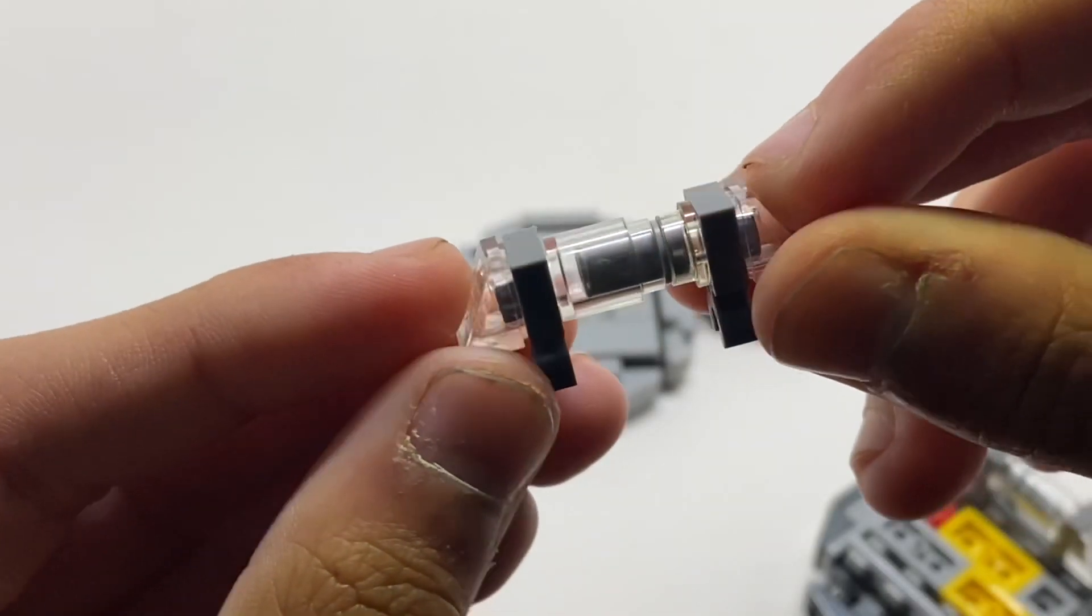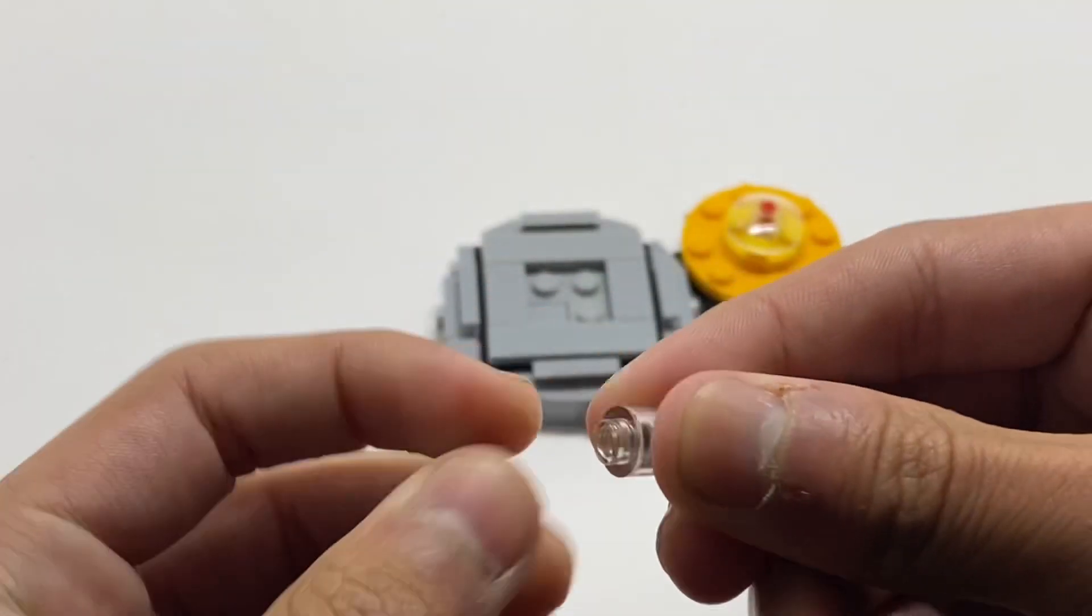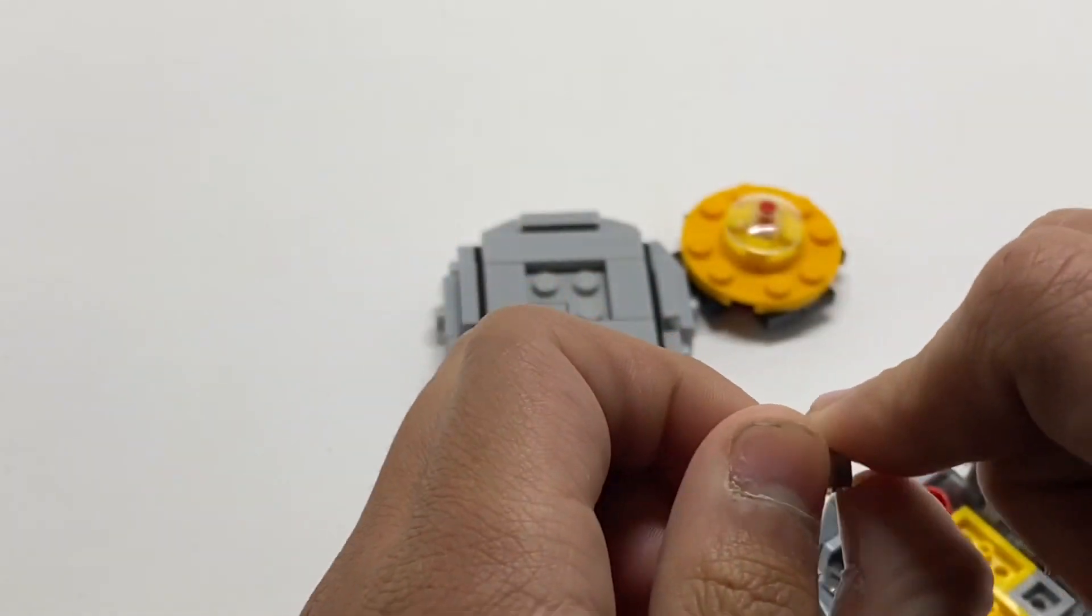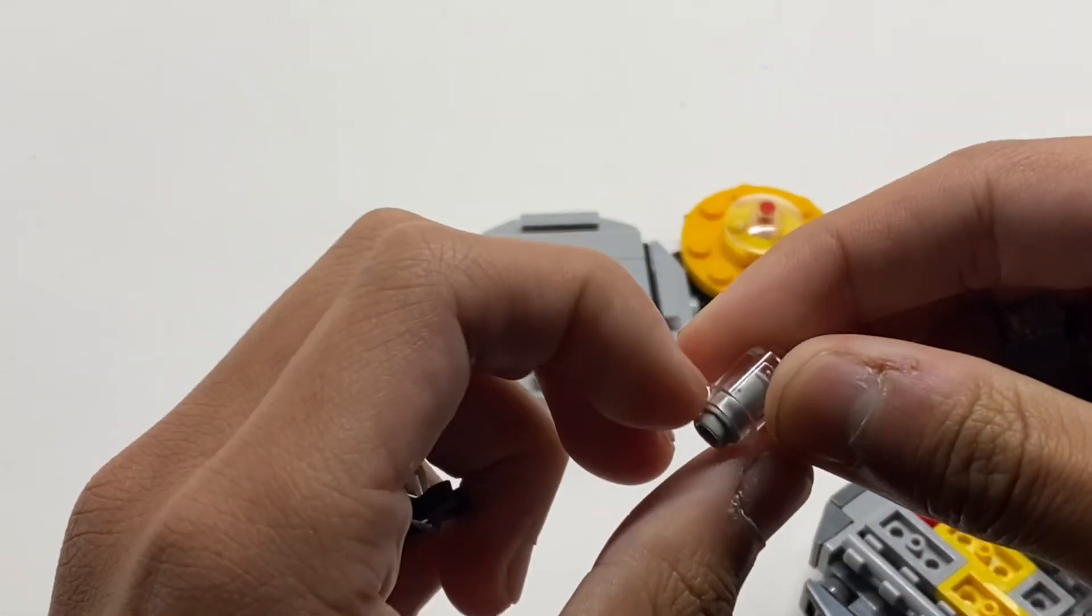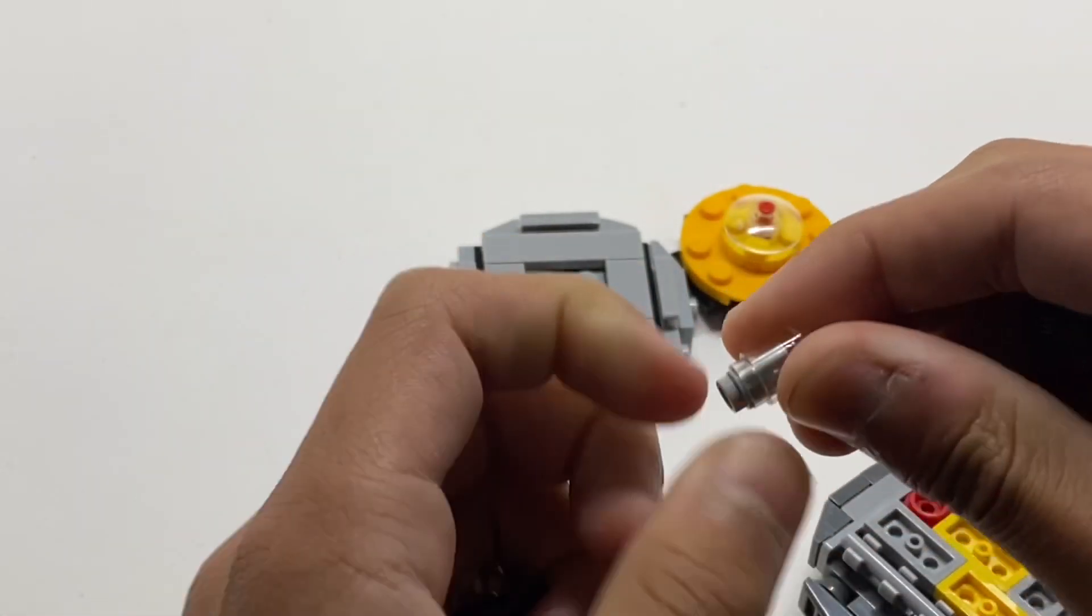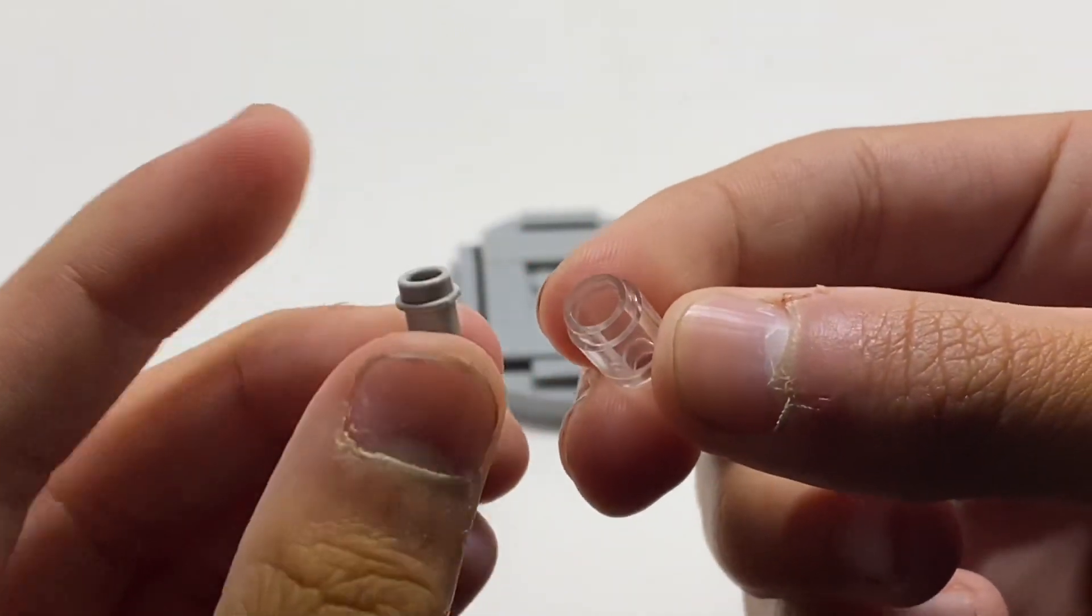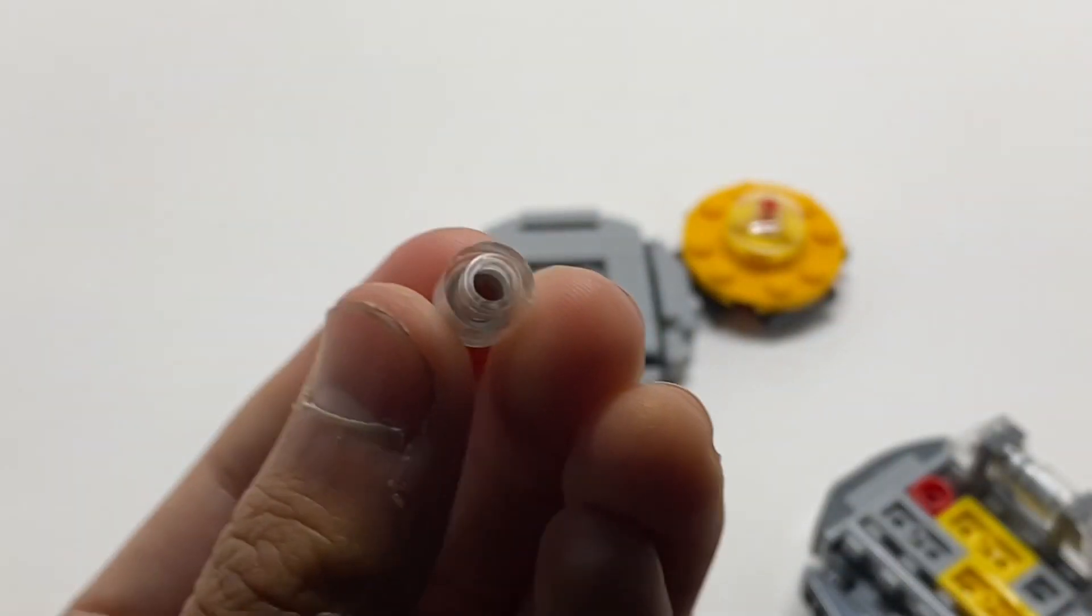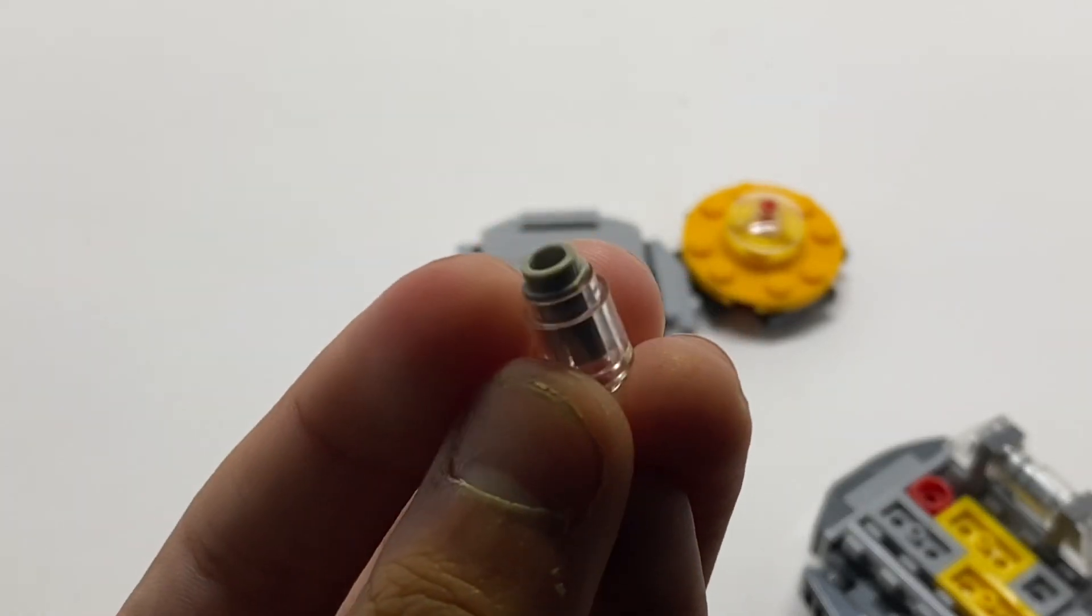These wings have a special little technique where you use a little Technic pin and a 1x1 cylinder piece. You can take the little Technic pin, put it inside the cylinder piece, and you have a double-sided 1x1 cylinder.